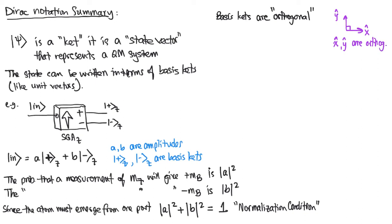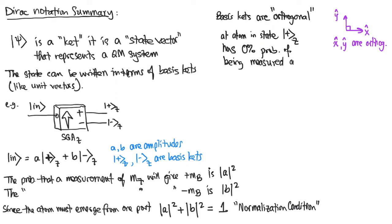Here we're saying that the basis states are orthogonal, and what we mean by that is that an atom — specifically a silver atom — in state plus-z has no probability of being measured in mz-minus. If you take an atom that's in a pure plus-z state and put it into an analyzer, it will come out the plus-z port 100% of the time and has no probability of coming out the minus port. That's what we mean by orthogonal.